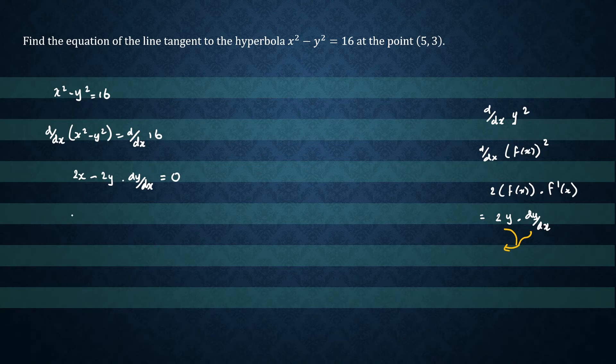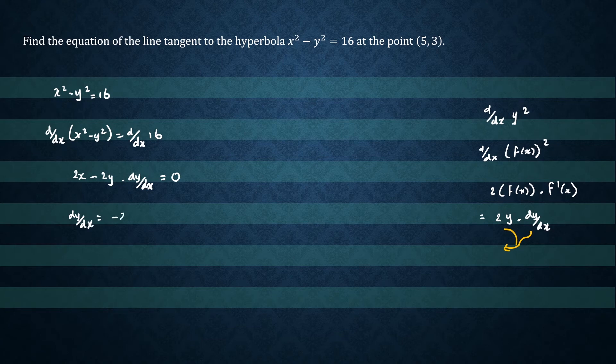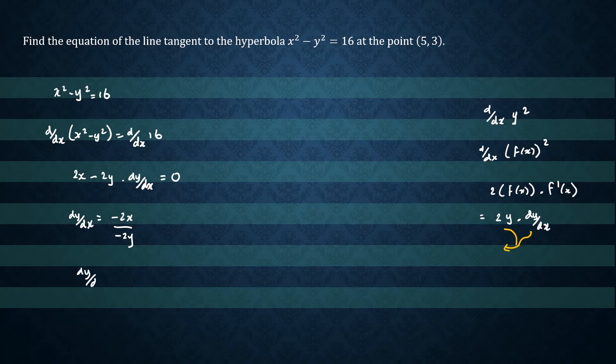So just rearrange. We'll have dy/dx equals negative 2x divided by negative 2y. So our derivative dy/dx equals x over y.